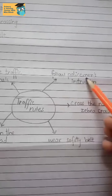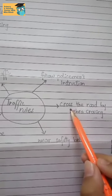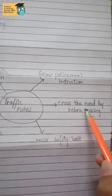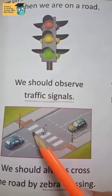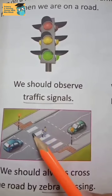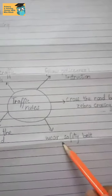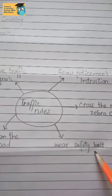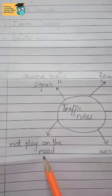The second rule is we should follow the policeman's instructions. The third rule is we should always cross the road by zebra crossing. As you can see in this picture, these white and grey lines are called zebra crossing. The fourth rule is we should always wear a safety belt. The fifth rule is we should not play on the road — it's very dangerous.